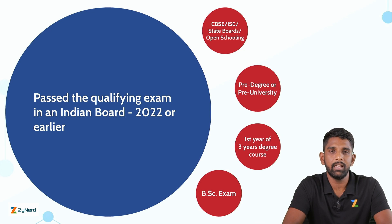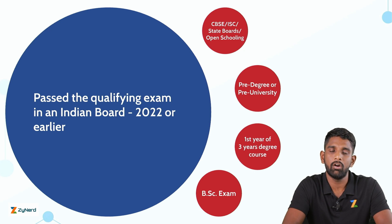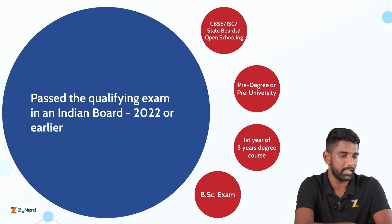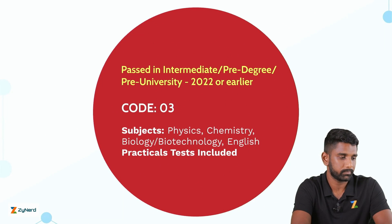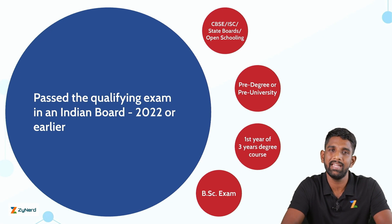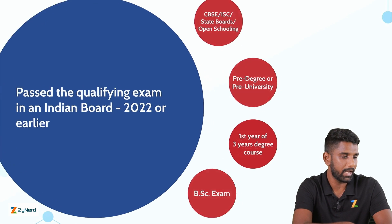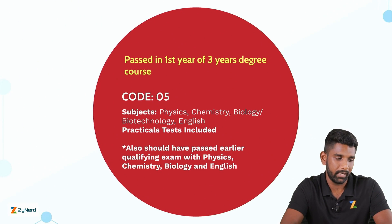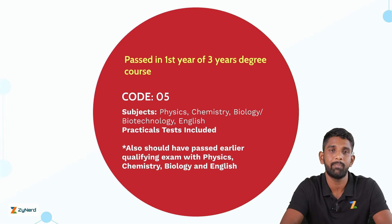If the candidate has completed their qualifying examination in a pre-degree or pre-university, then they have to select Code 3. If the candidate has passed their first year of a three-year degree course, then they will have to select Code 5. Please also note that the candidate should have passed their earlier qualifying examination with Physics, Chemistry, Biology or Biotechnology, and English.